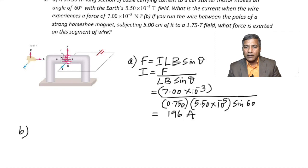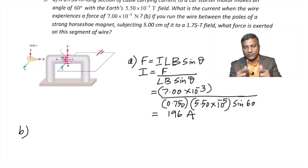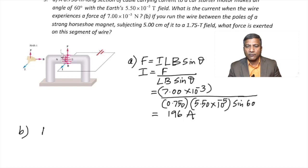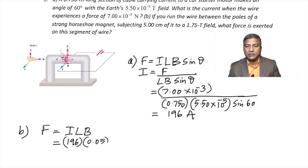Part B: if the wire runs between the poles of a strong horseshoe magnet, subjecting 5.00 cm of it to a 1.75 Tesla field, what force is exerted? Using the same formula F = ILB sin θ, with the current of 196 A from part A, length 0.05 m, and field 1.75 T, we calculate a force of 17.1 newtons.